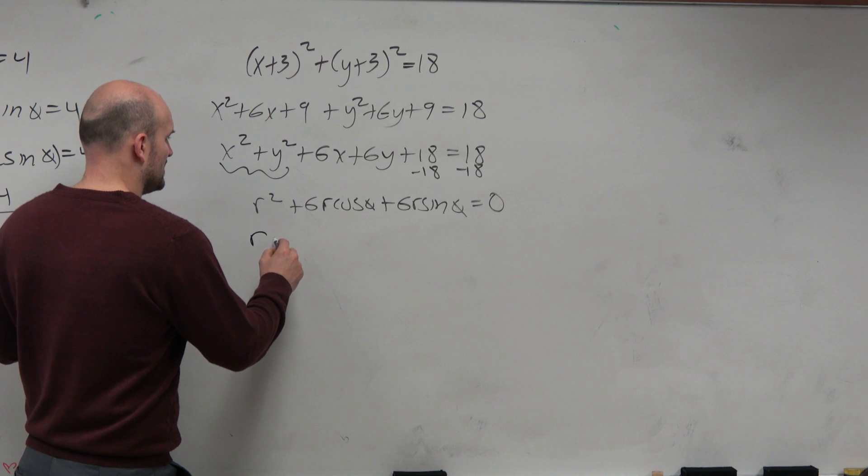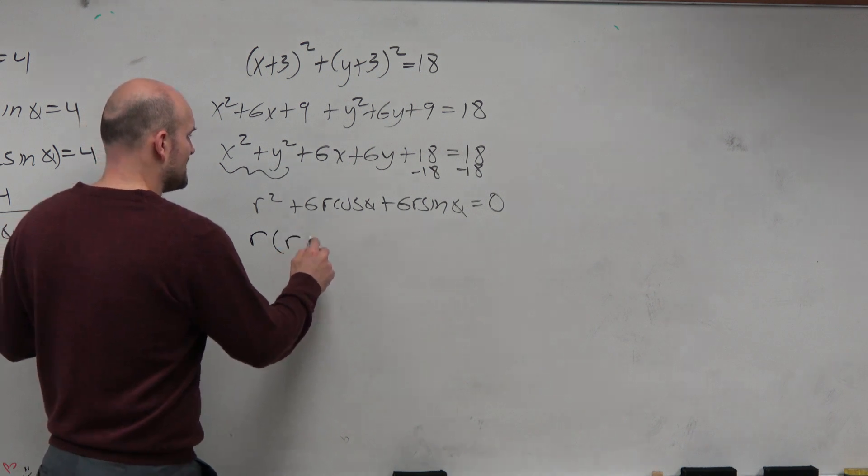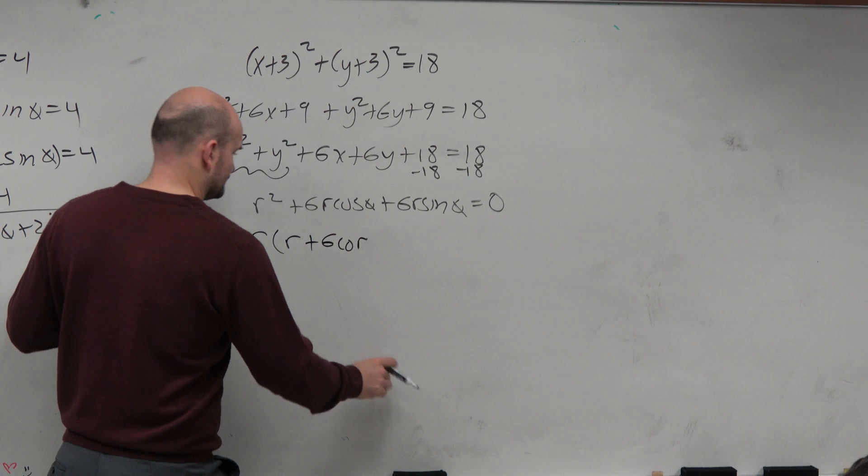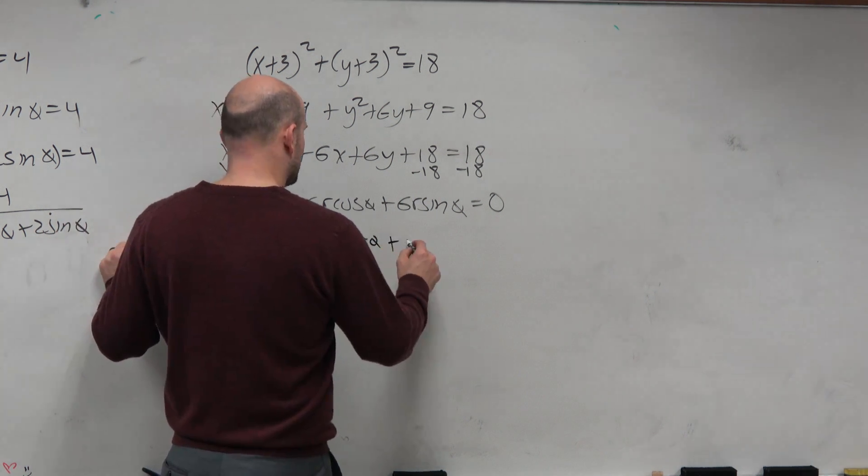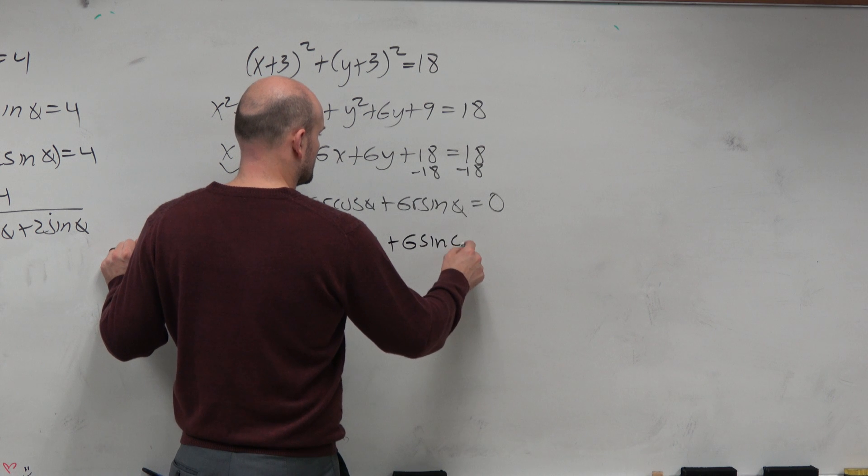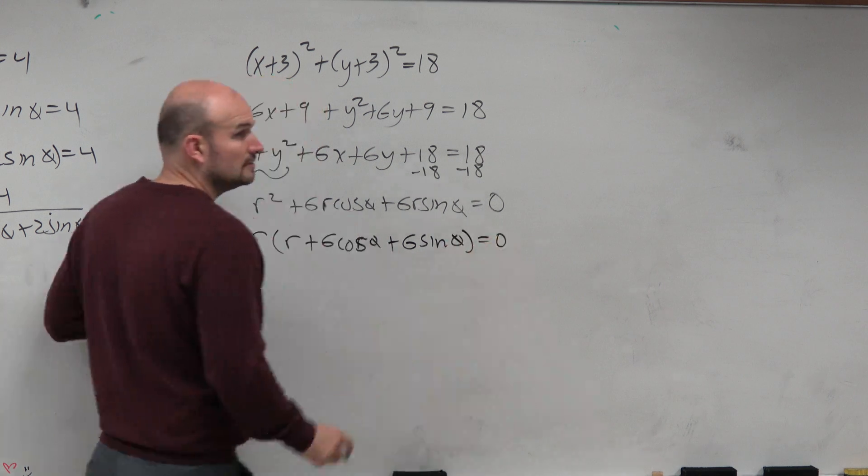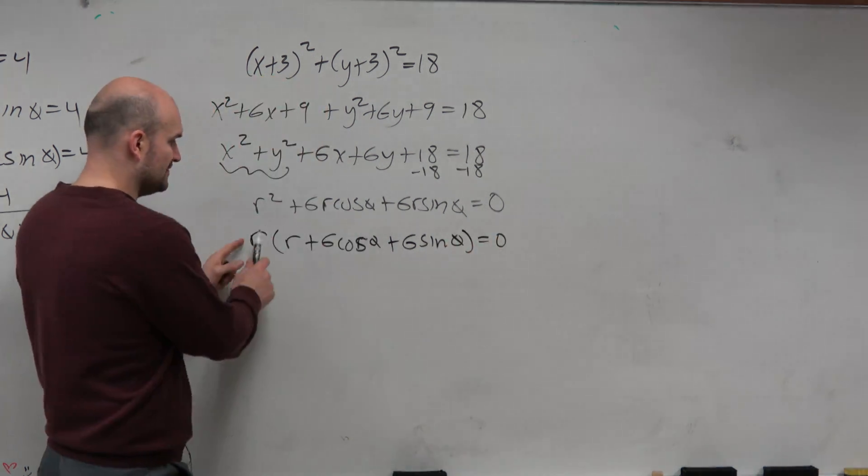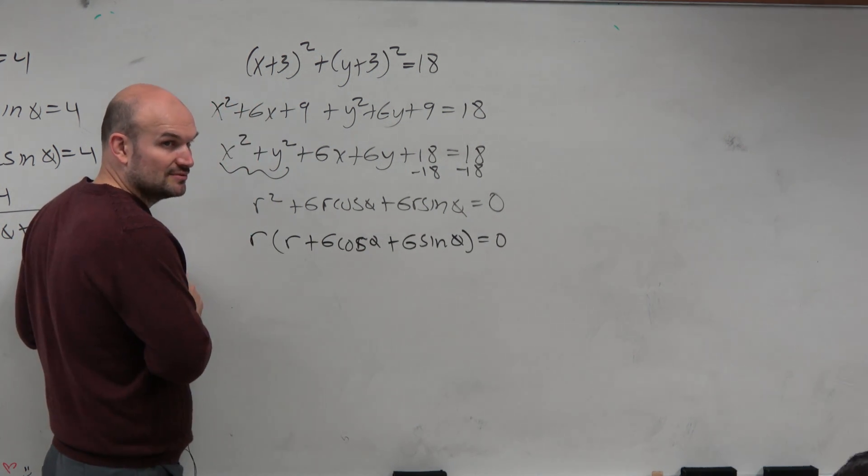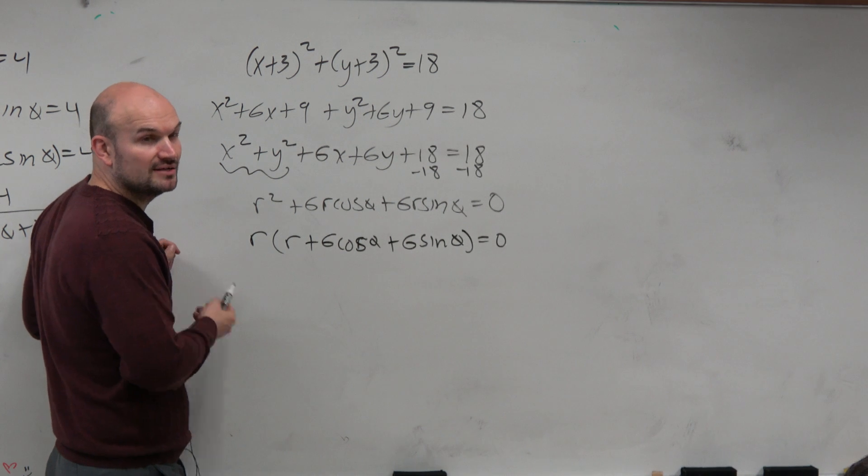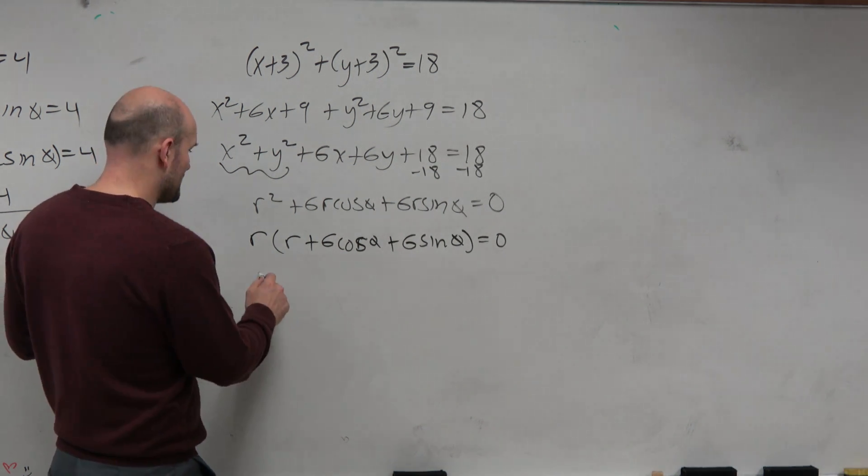Now here's a cool thing about factoring in this case. When I factor them, when I factor out an r, what does my factored form multiply to? Yeah, but I have this times this equals zero. So I have the product of two factors equal to zero. That means I can apply the zero product property.